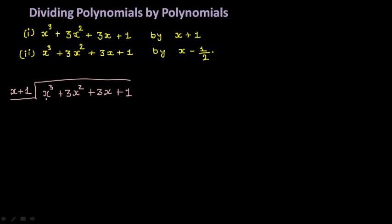You need to look at the first term — you need x cube. What do you multiply with x to get x cube? If you multiply x with x square, you get x cube. Or if you don't understand, you can divide x cube by x: x raised to 1 cancels and you get x square. So you keep x square here. After 10 or 15 questions you will directly know which term to keep, but while learning you can check this way. x multiplied by x square gives you x cube.